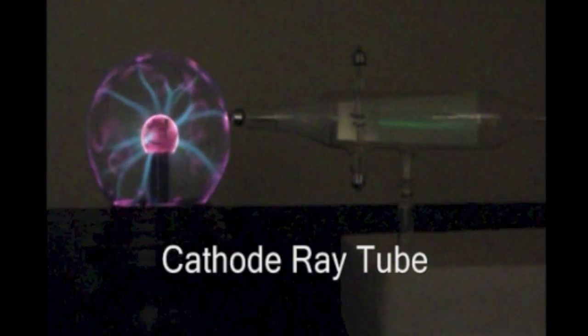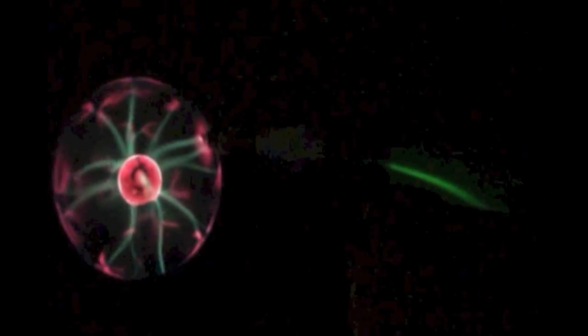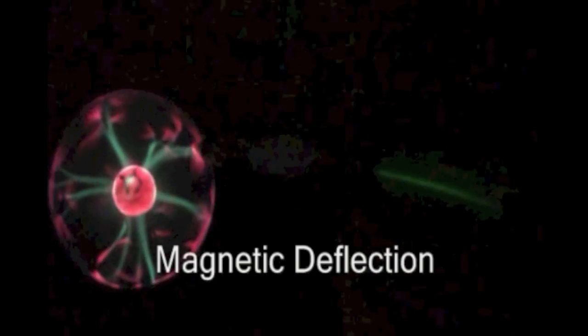A plasma ball provides a safe source of high voltage that can allow you to investigate the properties of a cathode ray safely. Teacher and student alike can now safely and easily demonstrate magnetic deflection of electrons and relive the discoveries of J.J. Thompson, thanks to the marvelous plasma globe.